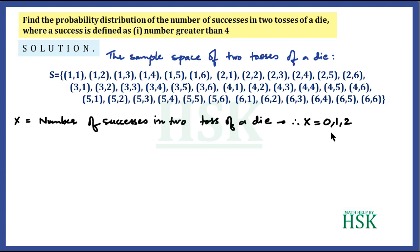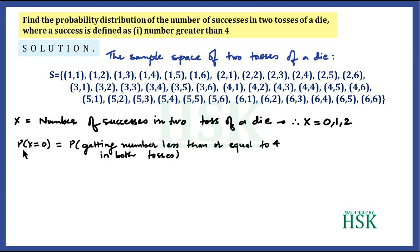If a number greater than four is not obtained in both throws, we get zero successes. If it is obtained in only one of the throws, that means one success. If in both throws we get a number greater than four, that means two successes. So the random variable X can take the values 0, 1, or 2. The probability that X equals zero is the probability of no success.